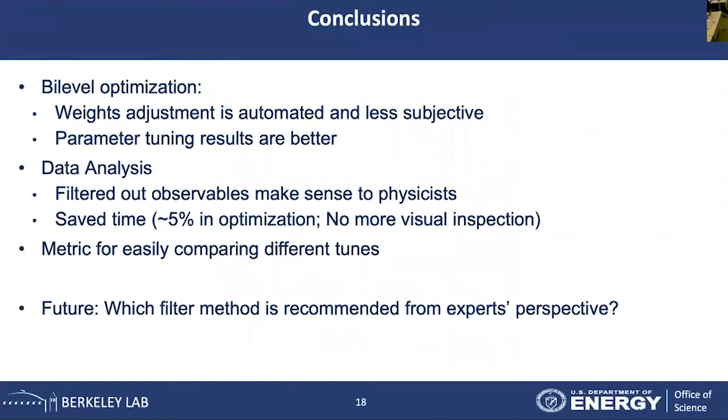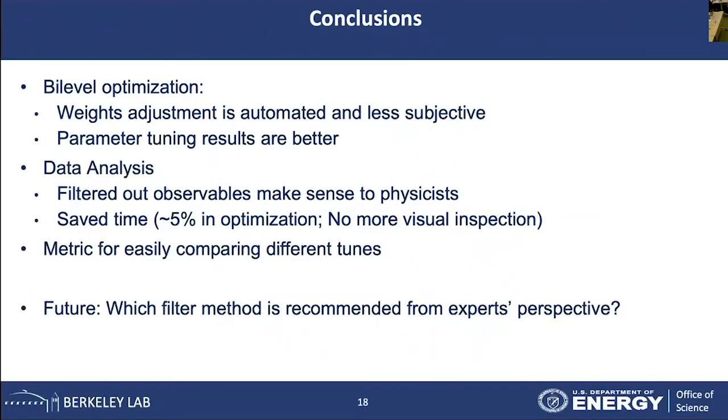In conclusion, our proposed bi-level optimization method makes the weight adjustment automated and less subjective, and the parameter tuning results are better. By pre-processing with data analysis and filtering out the relevant observables, the filtered observables make sense to the physicists. This saves time and eliminates the need for visual inspections. We have a metric to compare different tunes, and it shows our tune is way better than the Monash tune. In the future, we will explore more filtering methods and see which ones are recommended by physicists.